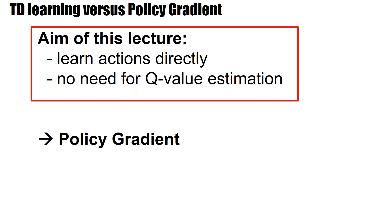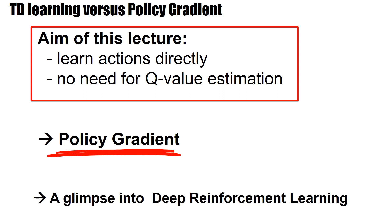The aim of this lecture is to ask: why should we first learn Q values and then derive actions from these? Let's try to learn the actions directly — then there is no need for estimations of Q values. This is the idea of policy gradient. The lecture will focus on policy gradient methods that don't need a Q value estimation, and towards the end of the lecture we will also give a first glimpse into deep reinforcement learning.